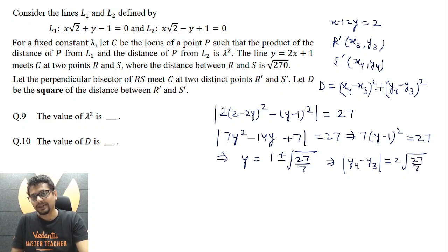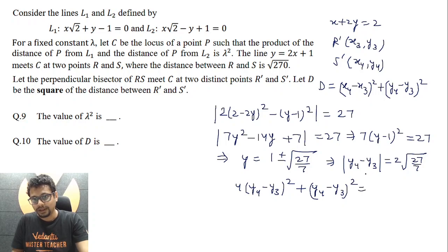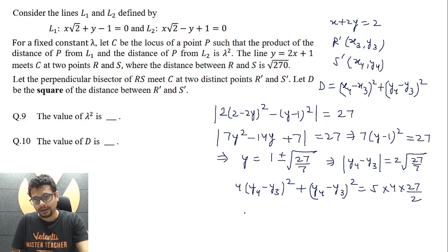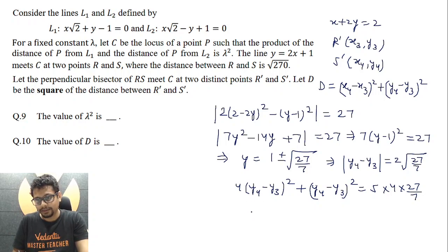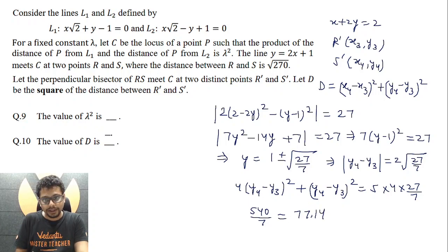We need d = (x₄ − x₃)² + (y₄ − y₃)². From the line x + 2y = 2 we get x = 2 − 2y, so x₄ − x₃ = −2(y₄ − y₃), meaning (x₄ − x₃)² = 4(y₄ − y₃)². Therefore d = 5(y₄ − y₃)² = 5 · 4 · 27/7 = 540/7 ≈ 77.14. The answer to question 10 is 77.14.